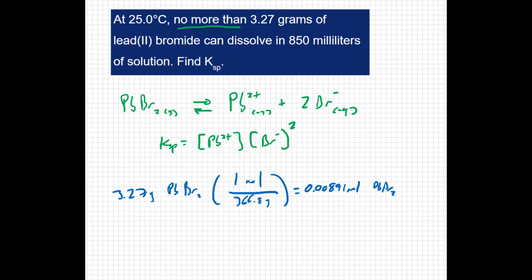We want to be in molarity because we're talking about solution. So I'm going to take my 0.00891 moles of PbBr2 and divide it by my liters. So 850 milliliters is 0.85 liters. I'm getting a molarity of 0.0105 molar PbBr2.